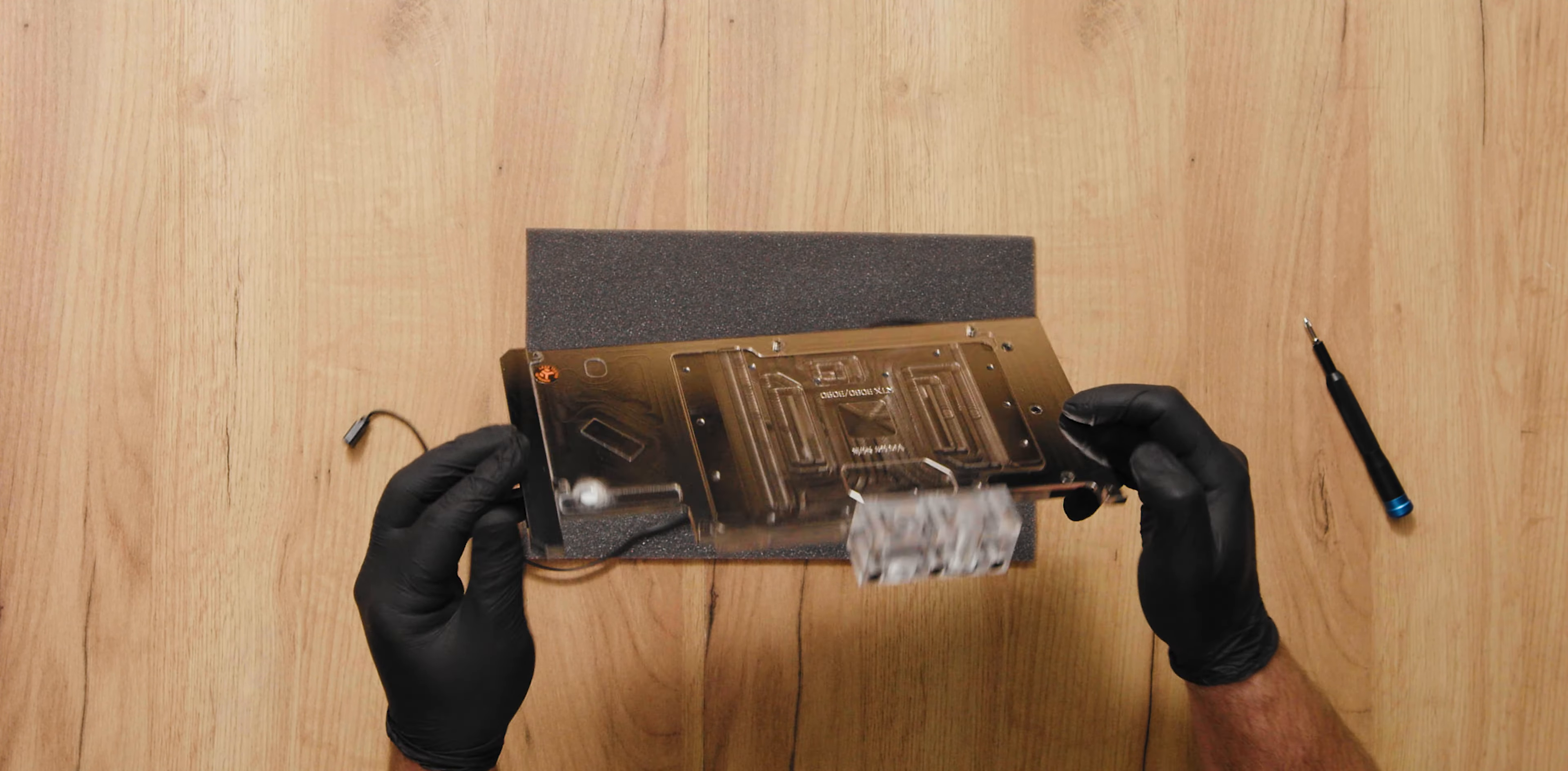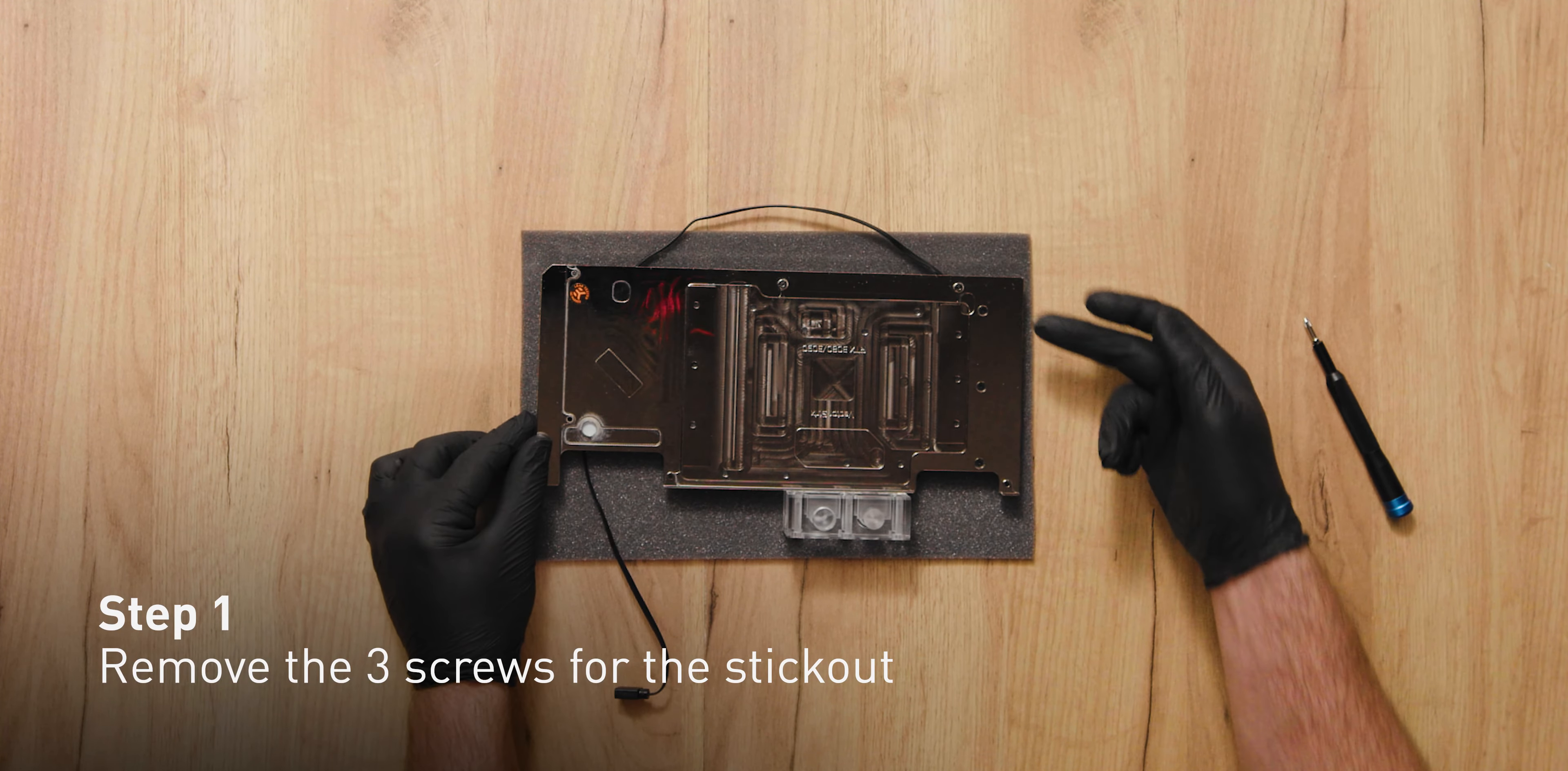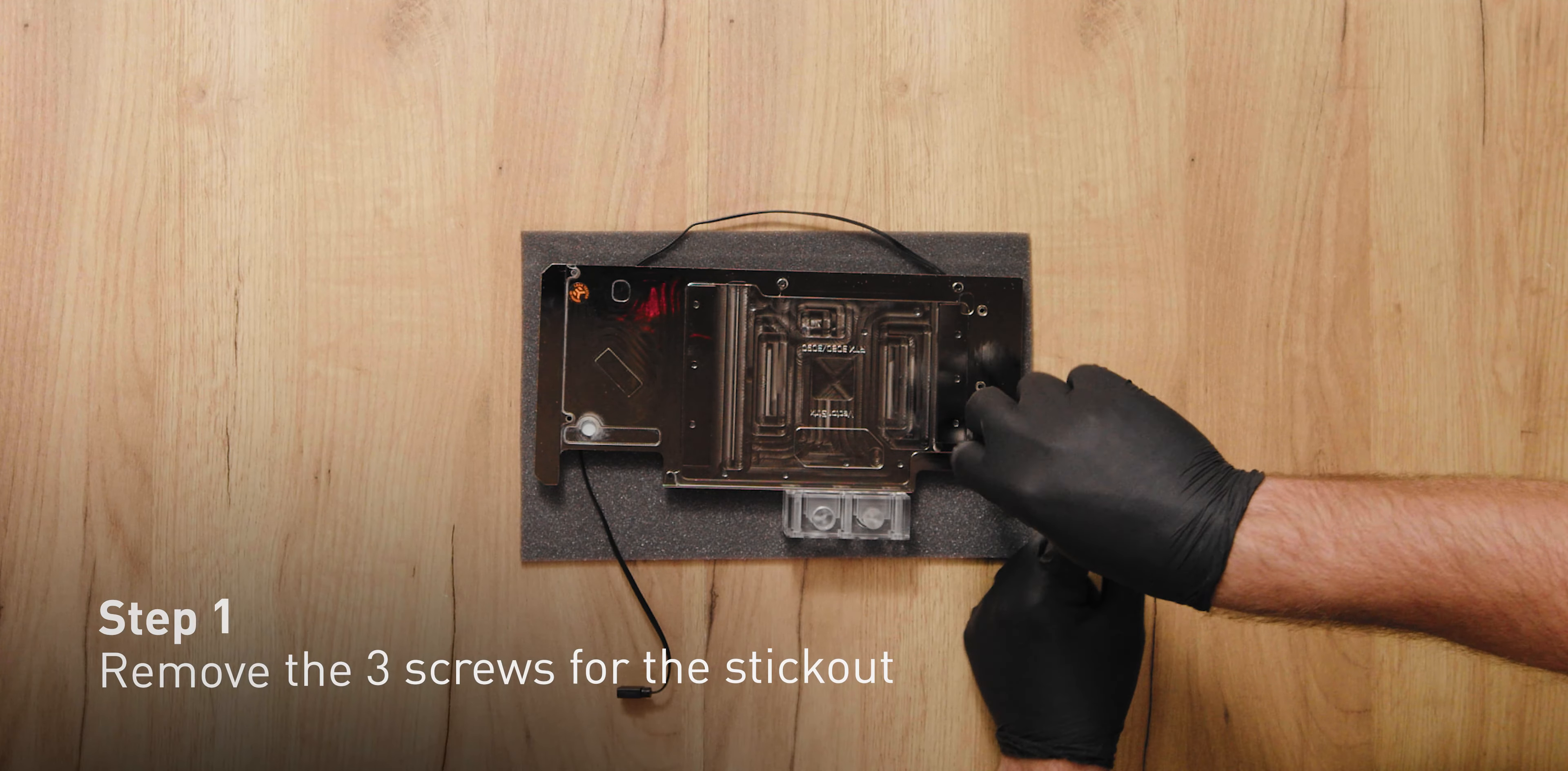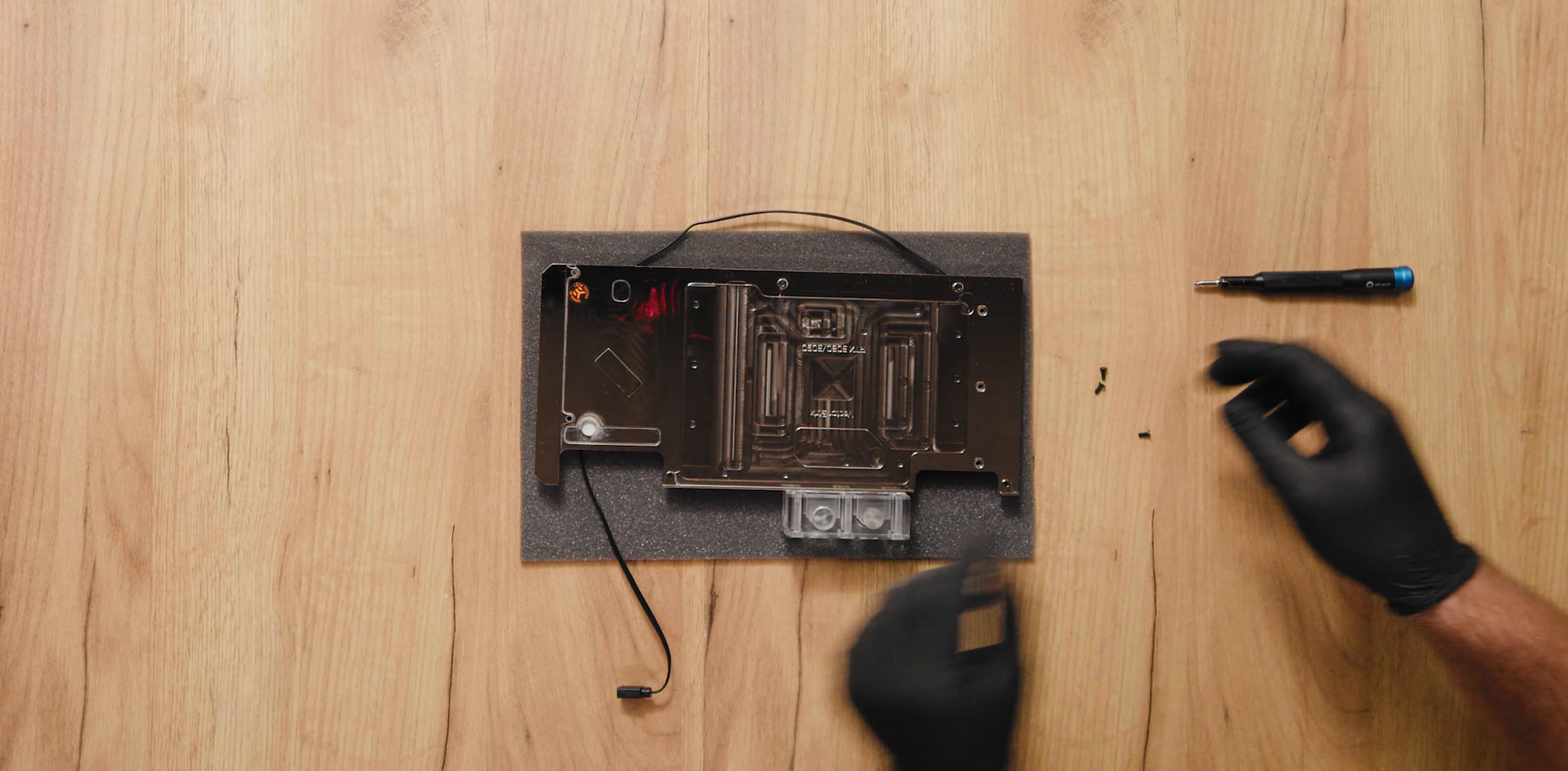Step 1. Place the active backplate on something that won't scratch the block. Remove the screws holding the stick out at the front of the block where the LED strip is located.